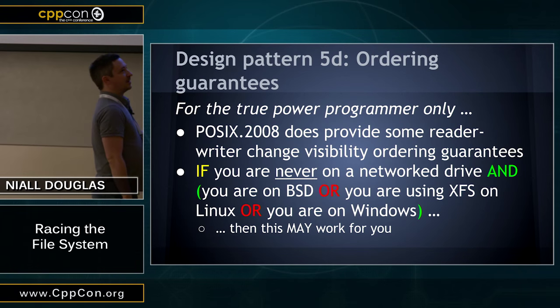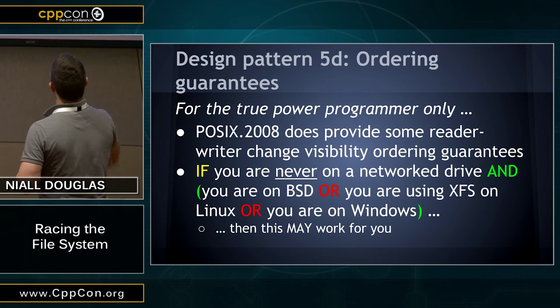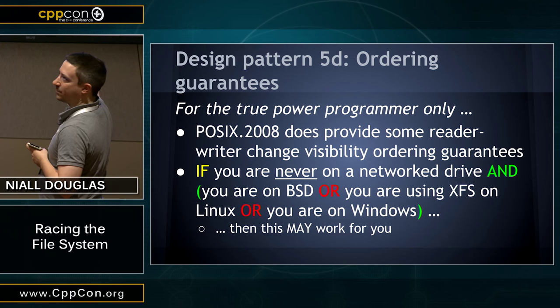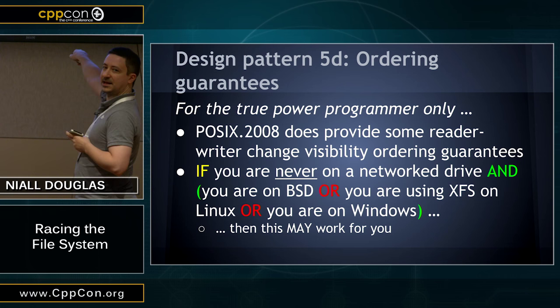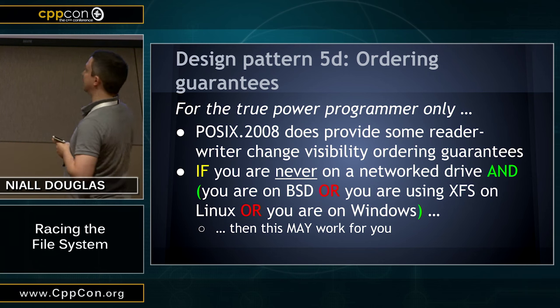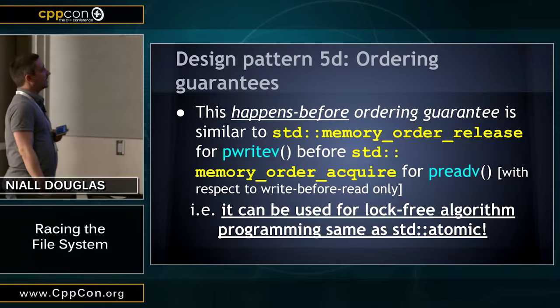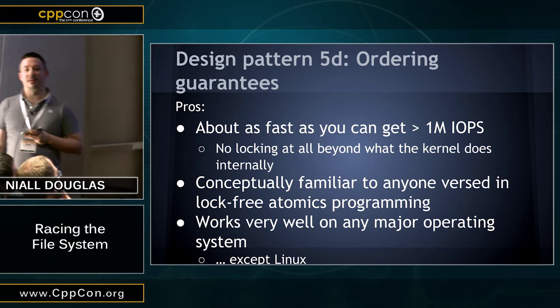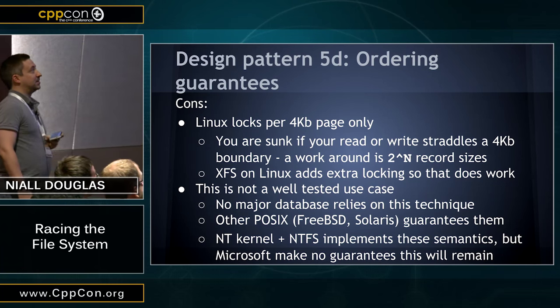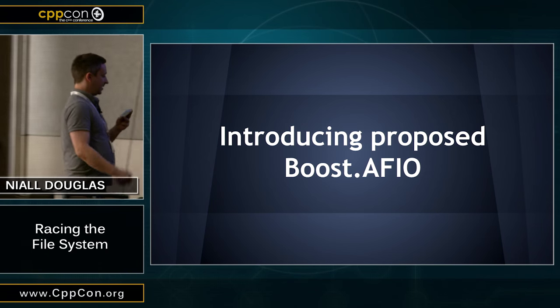The fourth technique — POSIX read-write ordering guarantees — is where you get performance of millions of lock and unlock operations per second, but it's voodoo-level complexity. It works only if you're never on a network drive and you're using BSD, XFS on Linux, or Windows. I'm going to skip explaining it due to time. I'm jumping straight to the Boost AFIO library, which addresses all of this.